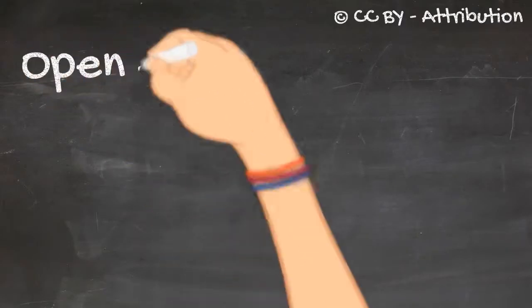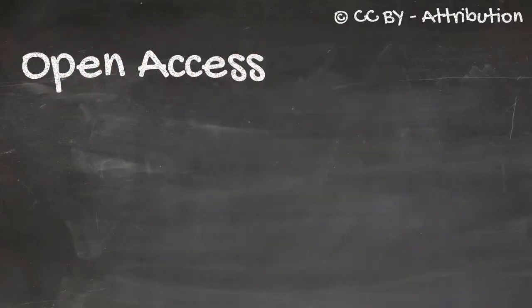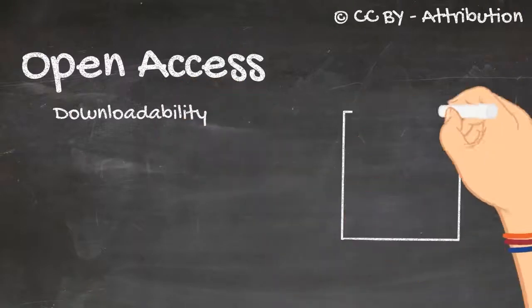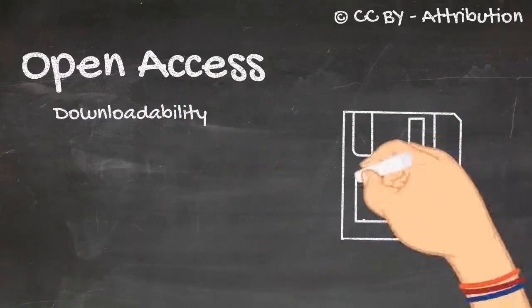Our rubric has three categories of accessibility, and the first one is open access. In this section, we're looking for access and usability issues at the basic level of openness. We're looking for downloadability. Can the resource be downloaded in a common and editable format?